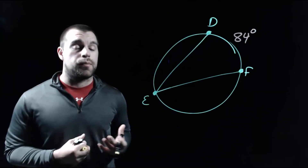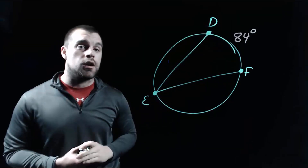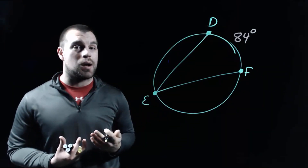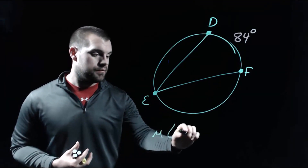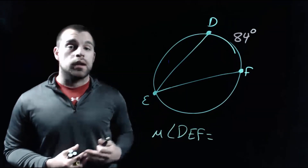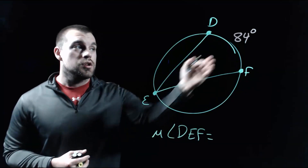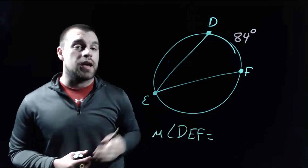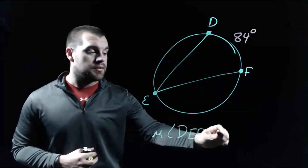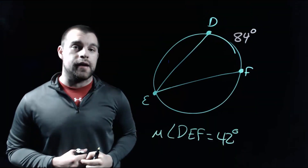Now this relationship also works in the opposite direction. So let's say we knew the measure of arc DF and wanted to figure out how big the inscribed angle is. The relationship is that the angle is half the measure of the arc. So if we know the arc, we divide it by 2. If we take 84 and divide it by 2, this ends up being a 42 degree angle for angle DEF.